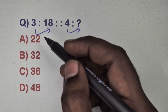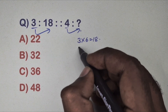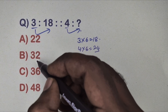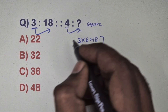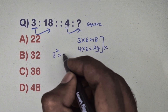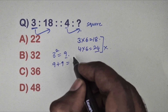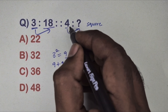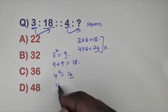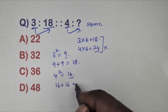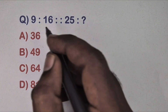Take 3 — 3 into 6 equals 18, and take 4 — 4 into 6 equals 24, but 24 is not present in the options, so this is the wrong method. Take 3: 3 squared equals 9, add 9 plus 9 to double the number, you get 18. Take 4: 4 squared equals 16, double it — 16 plus 16 equals 32. So option B is the correct answer.